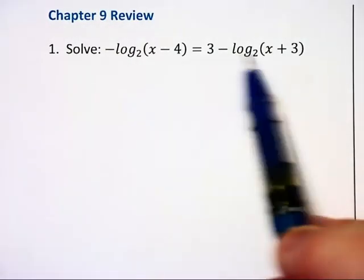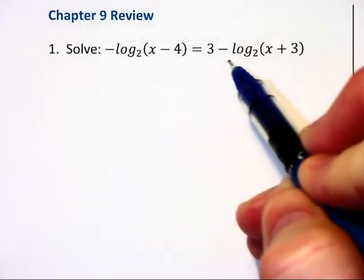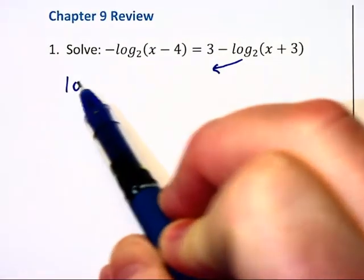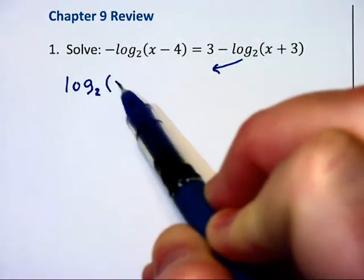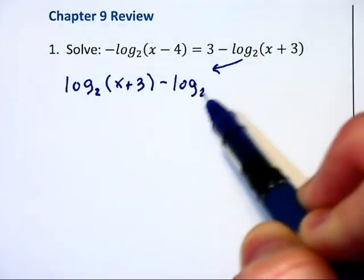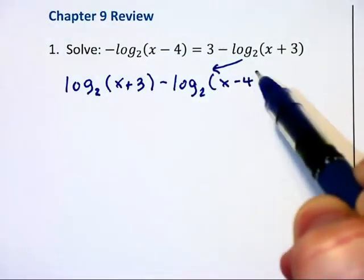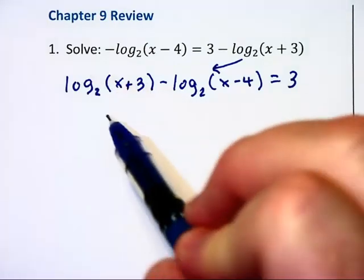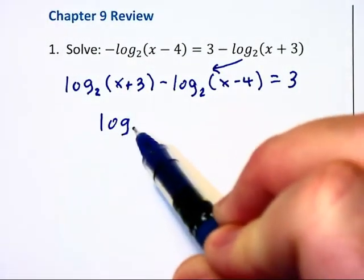I notice I have logs on each side, so I'm going to bring the logs from the right over to the left. That will give me log base 2 of (x+3) minus log base 2 of (x-4) equals 3. Since I have a difference of two logs, I can write this as the log of their quotient.